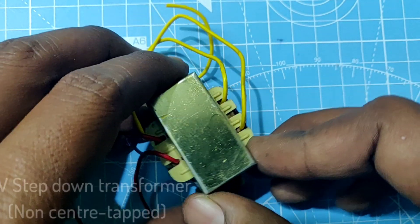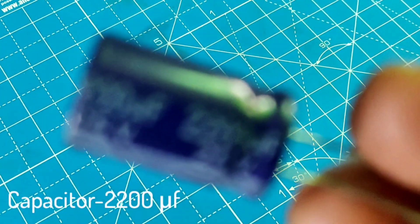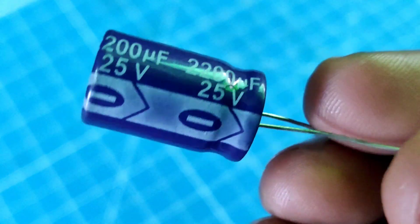Components required: 14 volt step down transformer which is non-center tap, 2200 microfarad capacitor, 4 IN4007 type diodes, 1 kilo ohm resistor.